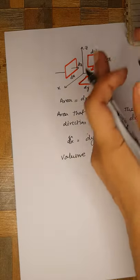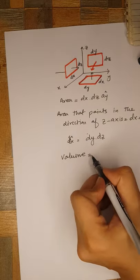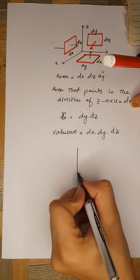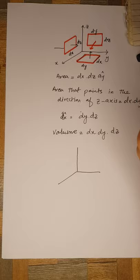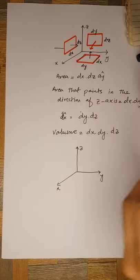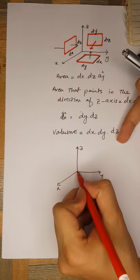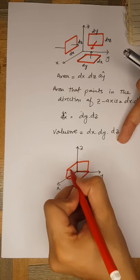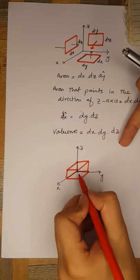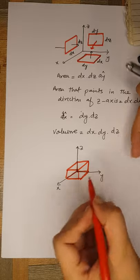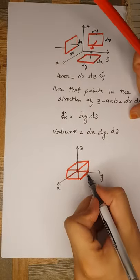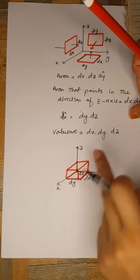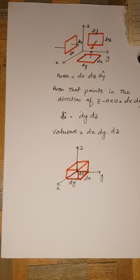The volume formed by combining all these surfaces is equal to the product dx·dy·dz. To be more specific: if we introduce changes dx, dy, and dz along all three axes of the coordinate system, we can see this actually forms a cube. The volume of the cube in the Cartesian coordinate system equals dx·dy·dz.